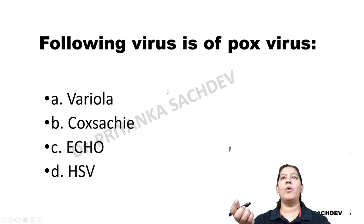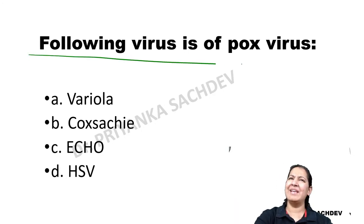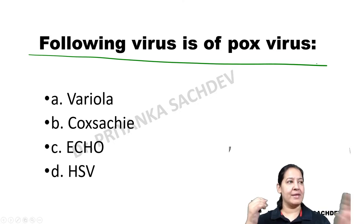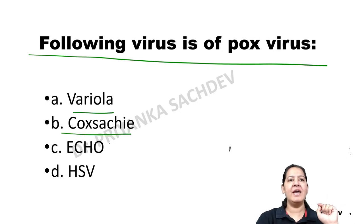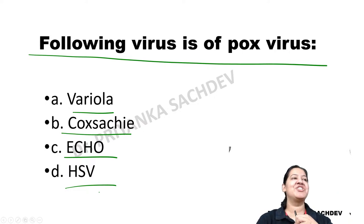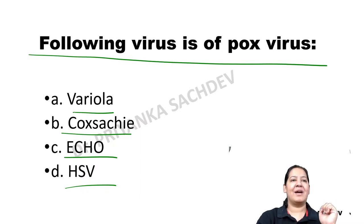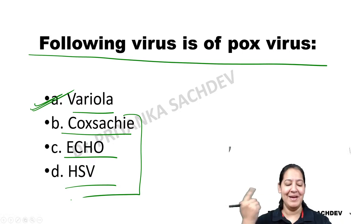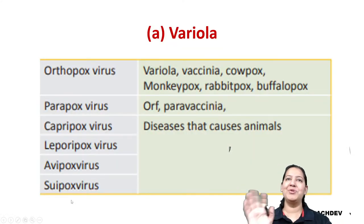MCQ: Which of the following is a pox virus? Options: variola, coxsackievirus, echovirus, HSV. The correct answer is variola. You must know the classification of pox viridae to answer such questions.